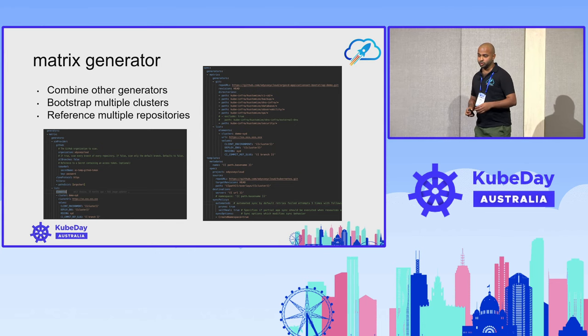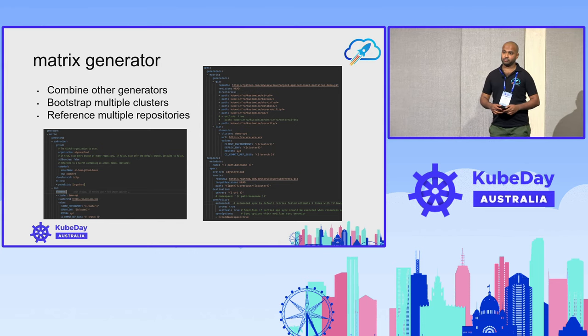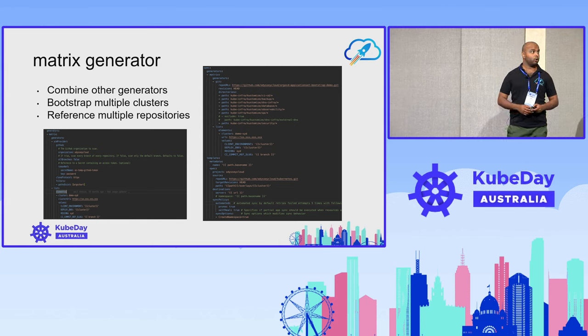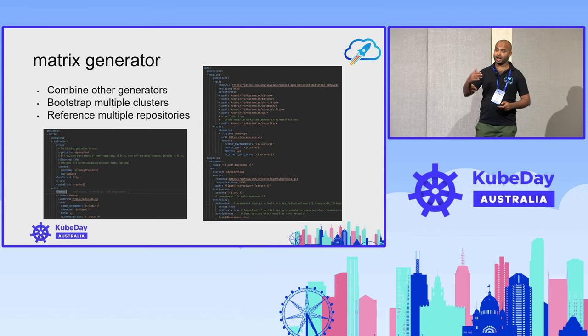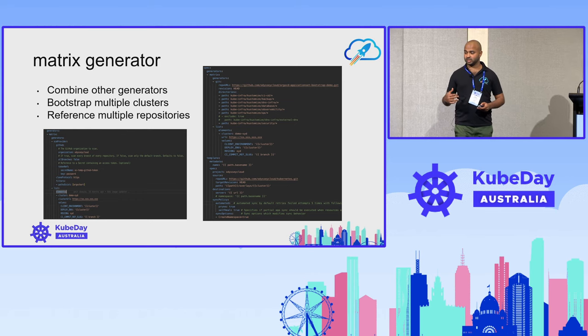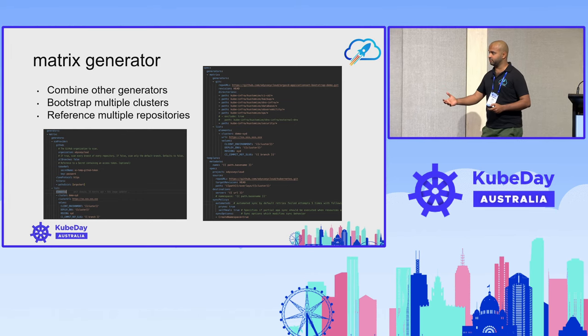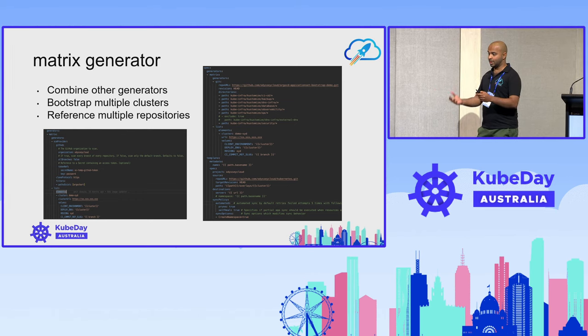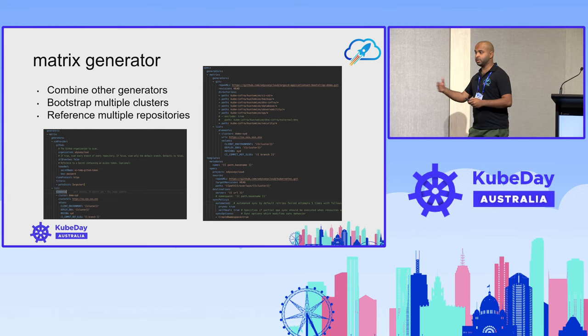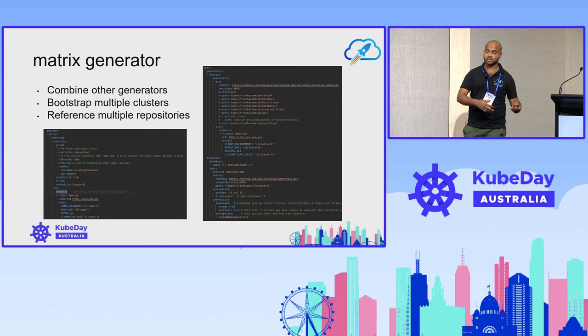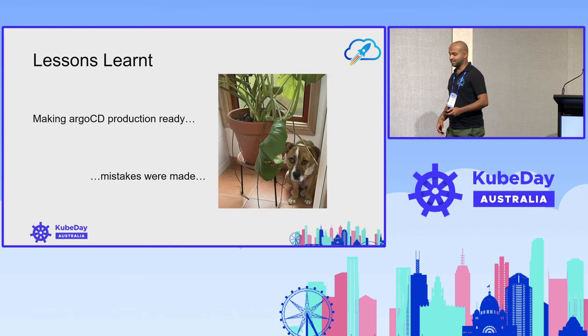In this example, you can see that we are deploying and bootstrapping our entire Kubernetes infrastructure — all the tools we need — through one single repo, deploying it on dev, staging, prod, and so on.